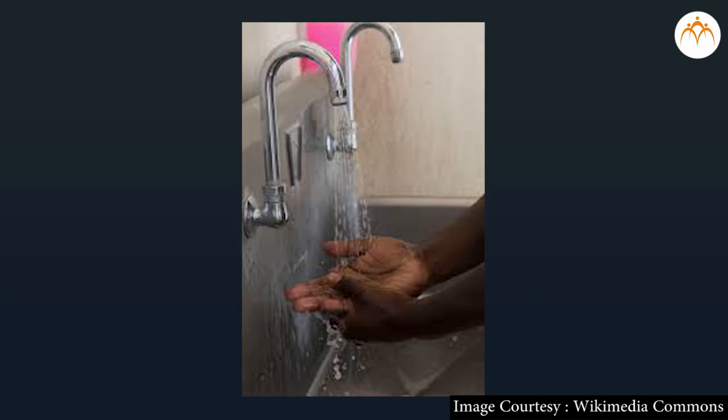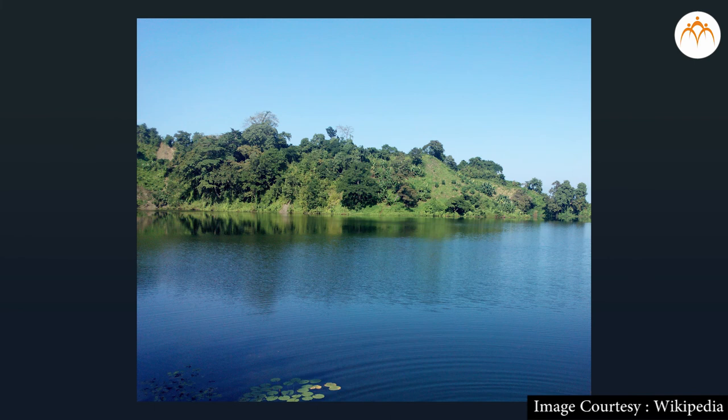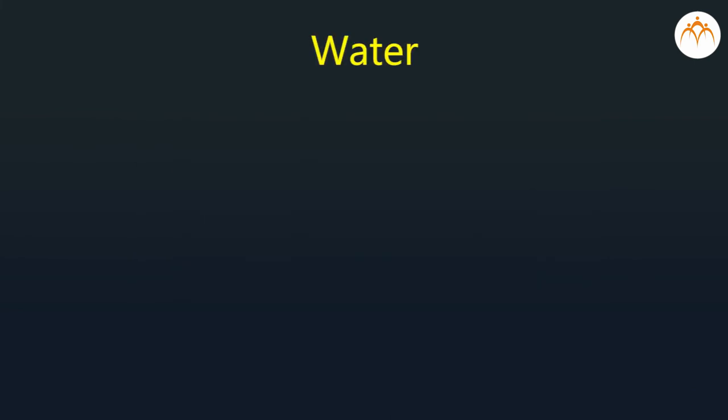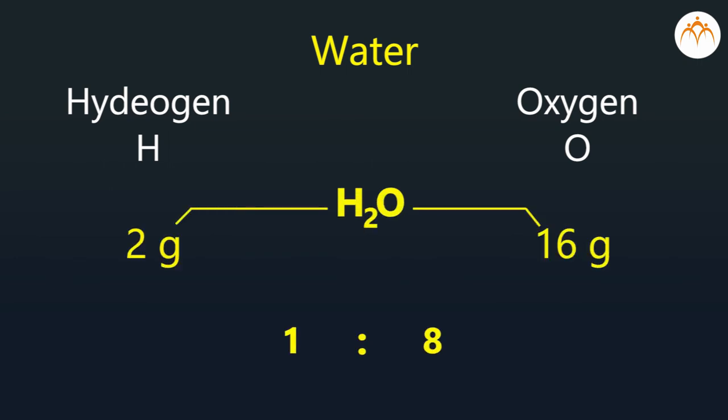One more important thing which we have to understand is that though the source of the compound is different, the proportion of the constituent elements is always fixed. Suppose we are getting water from different sources as a product of different reactions. Even then, the proportion by weight of hydrogen to oxygen in water is always 1 is to 8.